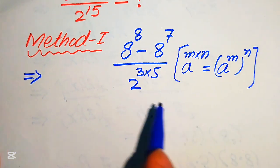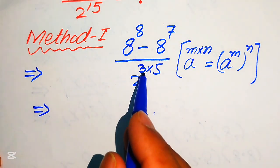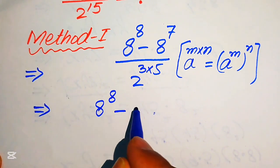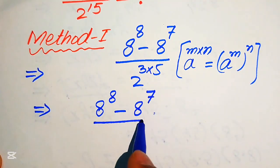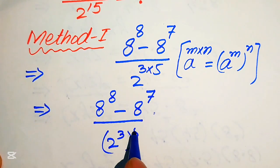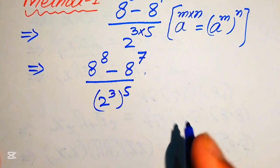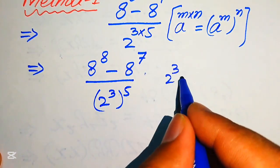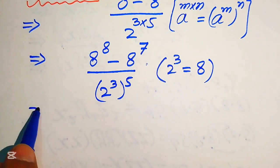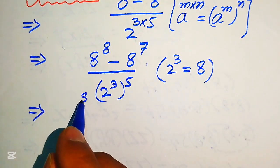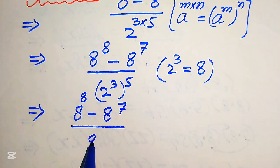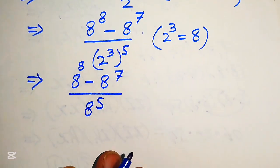According to this exponent law, we move the exponent 3 inside the term, and it is written as 8 to the power of 8 minus 8 to the power of 7, divided by 2 cubed, and its whole power is 5. We see that 2 cubed equals 8, so we replace 2 cubed with 8. The expression becomes 8 to the power of 8 minus 8 to the power of 7, all divided by 8 to the power of 5.